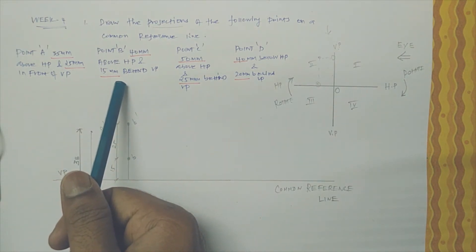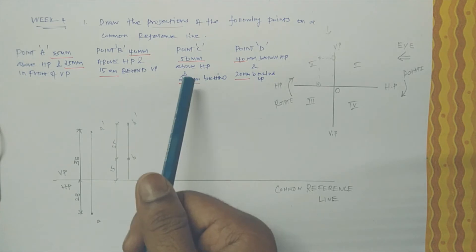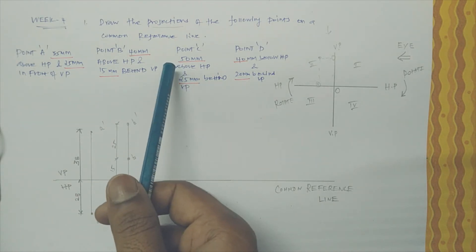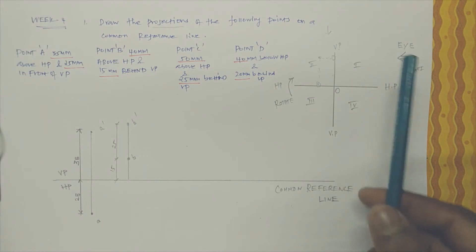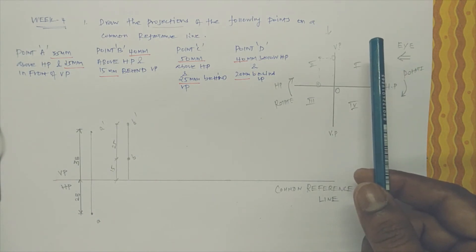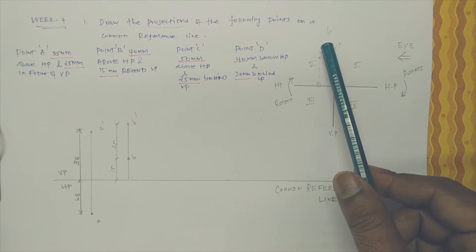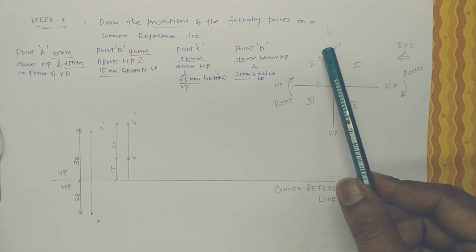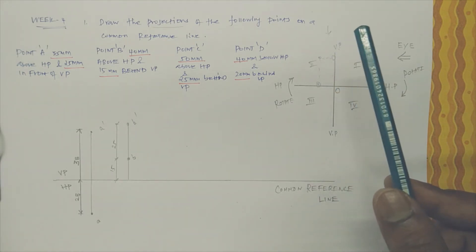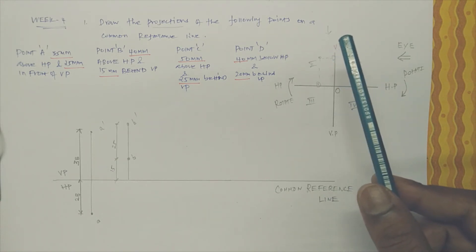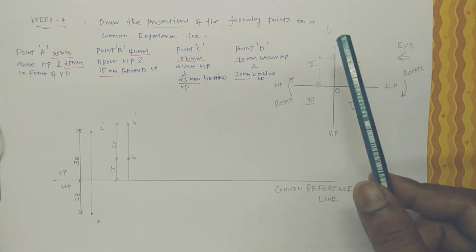For point C, they are asking: point C is 50mm above HP and 25mm behind VP. So this is also in the second quadrant — above HP and behind VP.